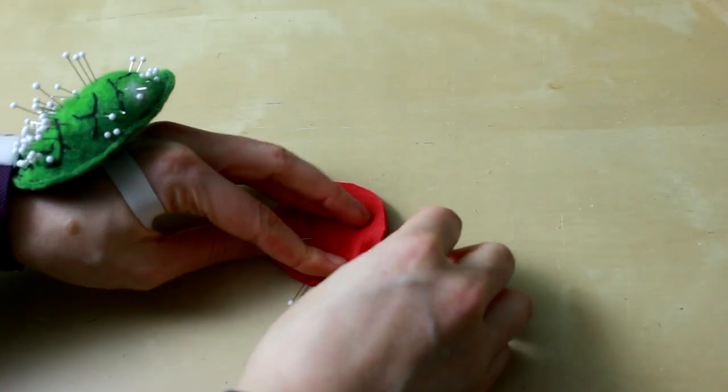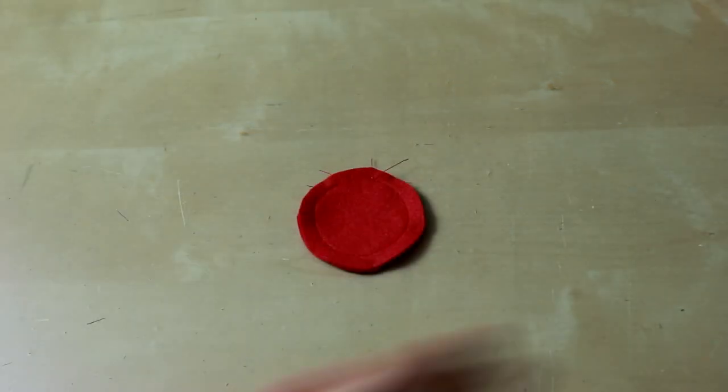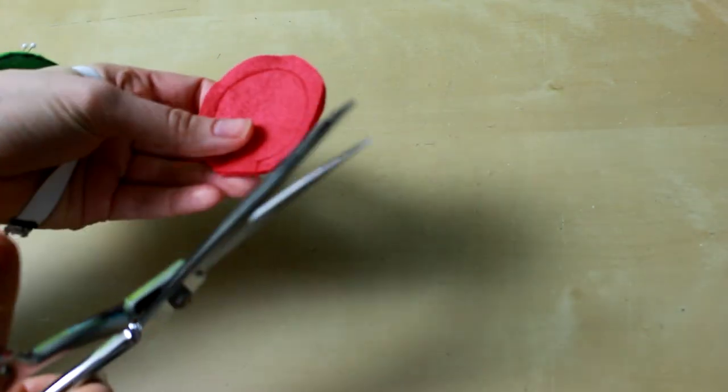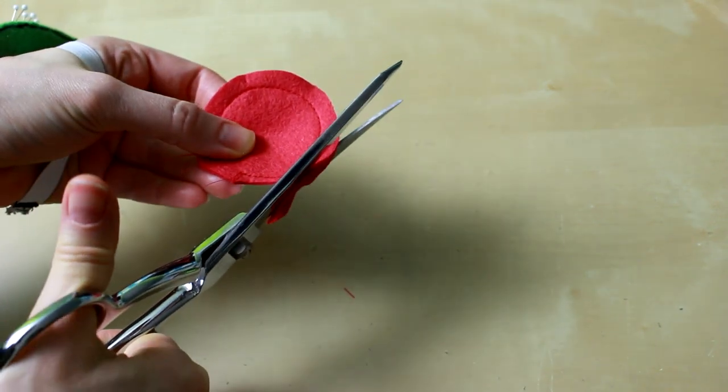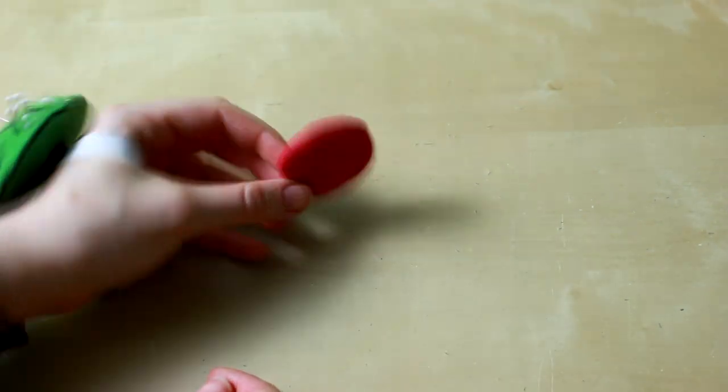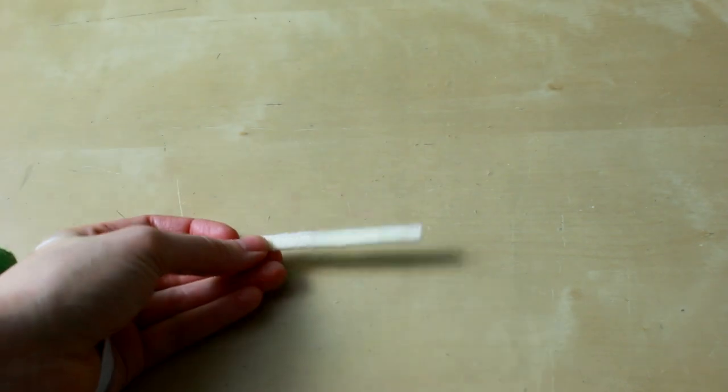Tomato time! Pin the two tomato slices right sides together. Sew around the edge of the tomato pieces using a quarter inch seam allowance, and being sure to leave a gap in the stitching for turning. Trim any excess seam allowance away. Turn the tomato bright side out. Finally, let's prep the onion. Fold the onion in half, and pin in place. Topstitch along the raw edge. That's it. It's time to assemble our burger.